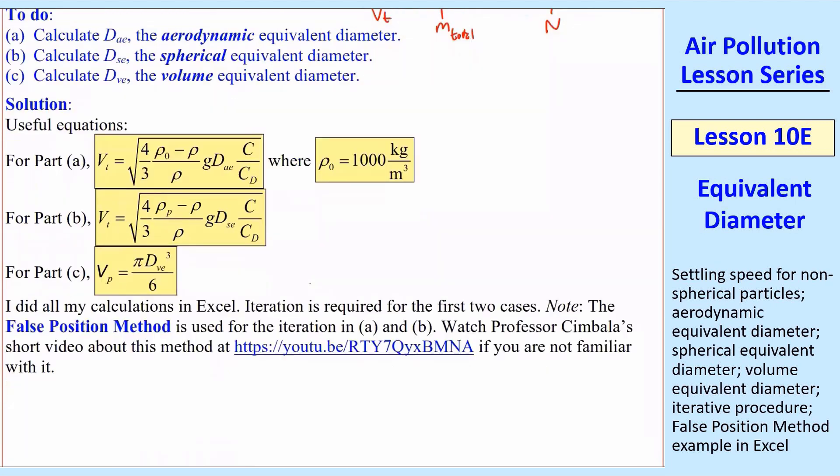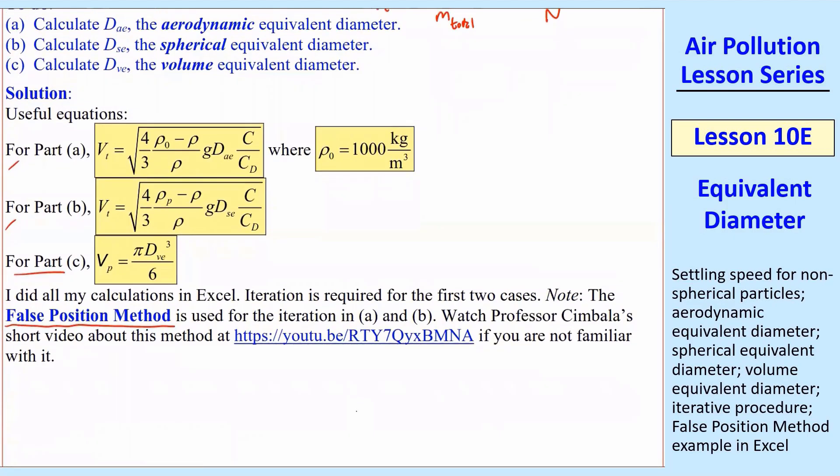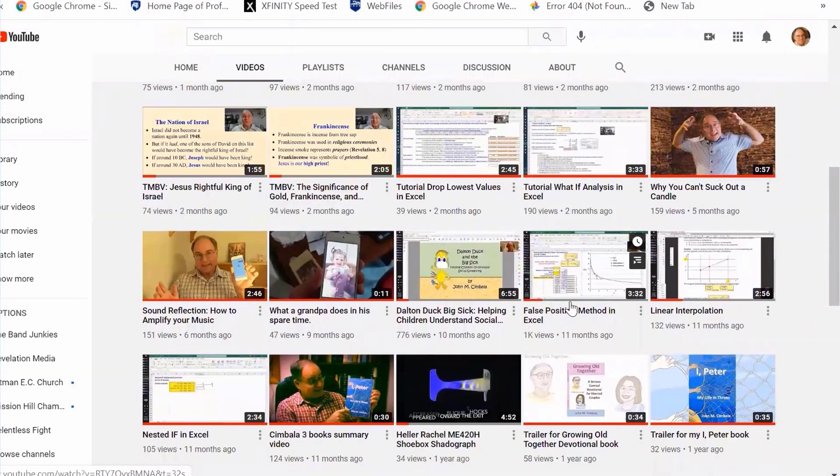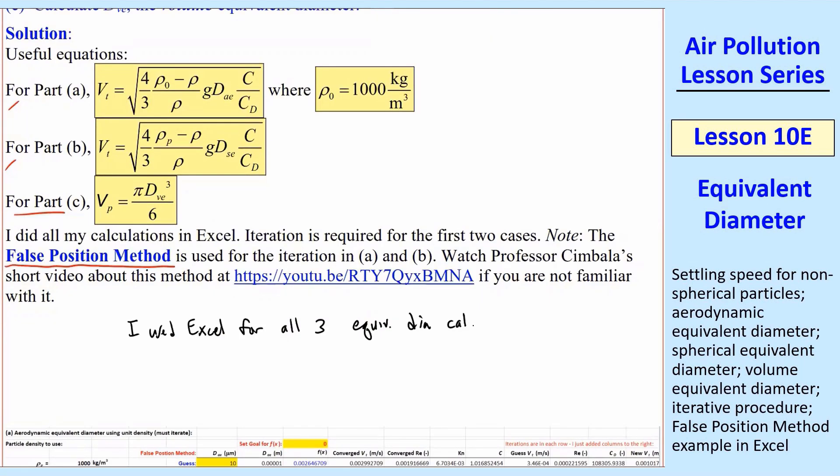I duplicated all the equations here. I did all my calculations in Excel. Iteration is required for the first two cases, not for the third one. Now, if you've never used the false position method, I would invite you to watch my YouTube video about the method. It's actually quite powerful, and I think you'll find it useful in your careers and in other courses as you go through. Anytime you have an implicit equation where you have to do some kind of iteration. In fact, you could use this to find vₜ from our previous lesson, but that technique I gave you is actually a little quicker and easier to set up. But false position method is very powerful, and so let me just show you where that is quickly. Here's my YouTube channel. It's right here, false position method in Excel. You could watch that on your own.